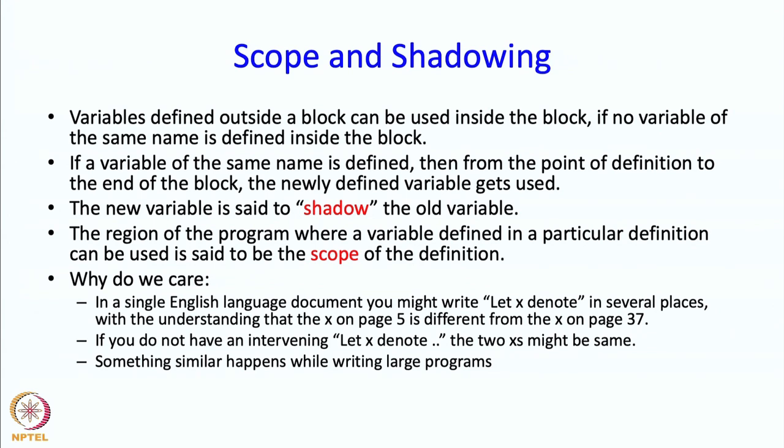Why do we care about all these things? In some sense programming is like writing text, say you are writing a long document. In a single English language document you might write let X denote in several places. If you write it on page 5 and on page 7, there is this implicit understanding that the X on page 5 is different from the X on page 7. You can say that the scope of the definition on page 5 is maybe from that page to page 37, or maybe to the end of the chapter or section. In English language the scope is not very formally specified, it is sort of left as understood. But in programming since the computer has to do something with it, we have to be really careful and talk about the scope.